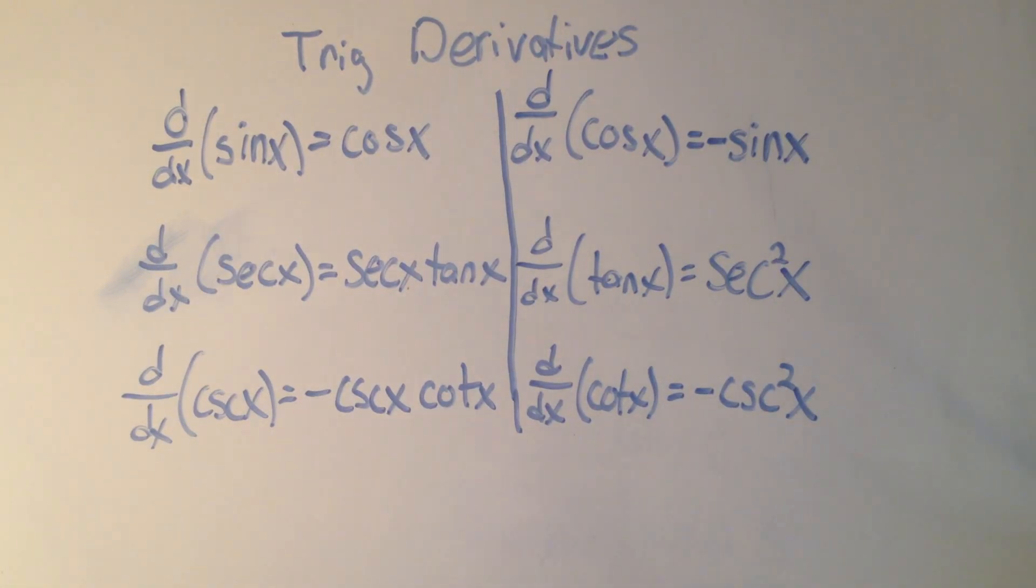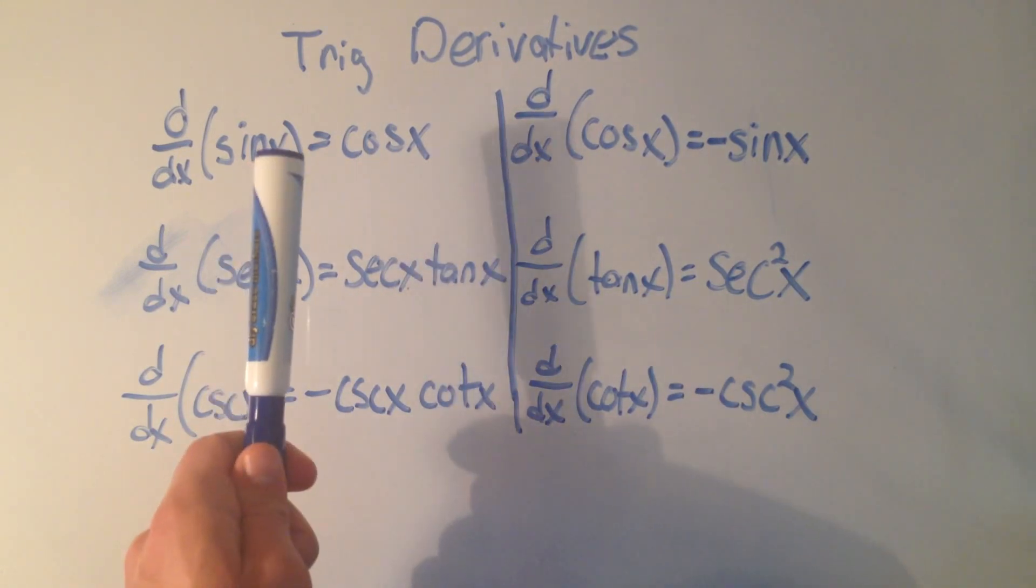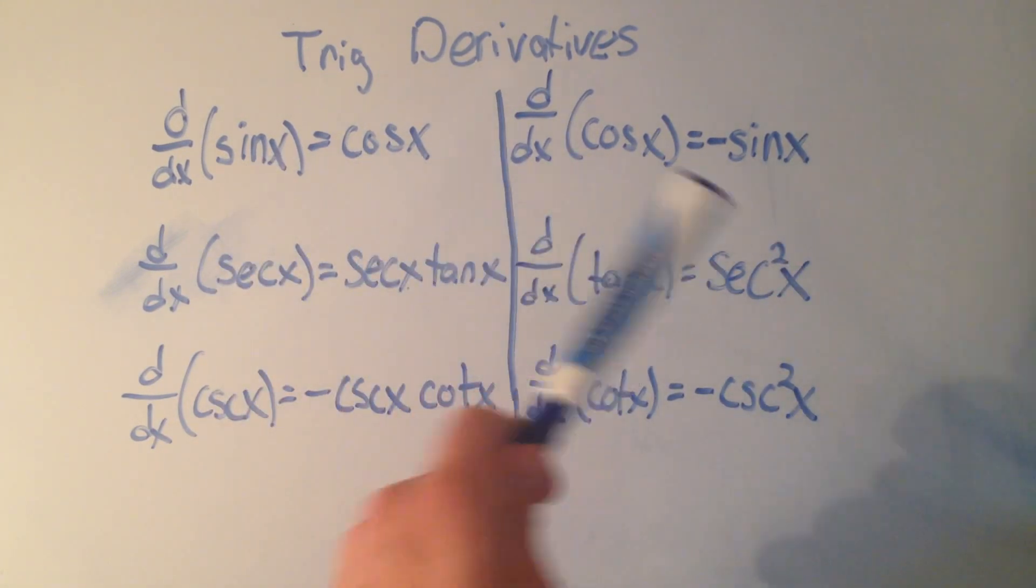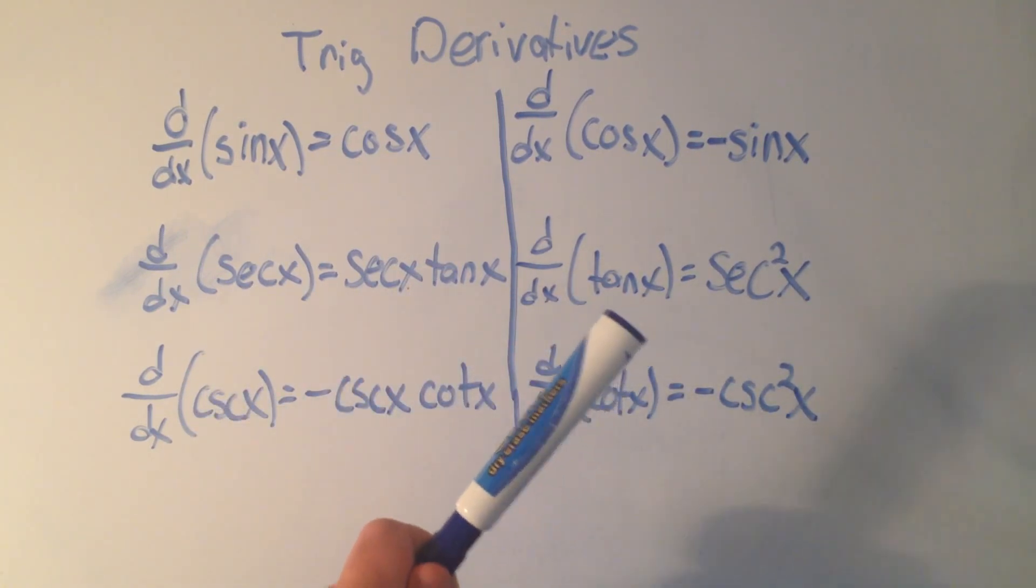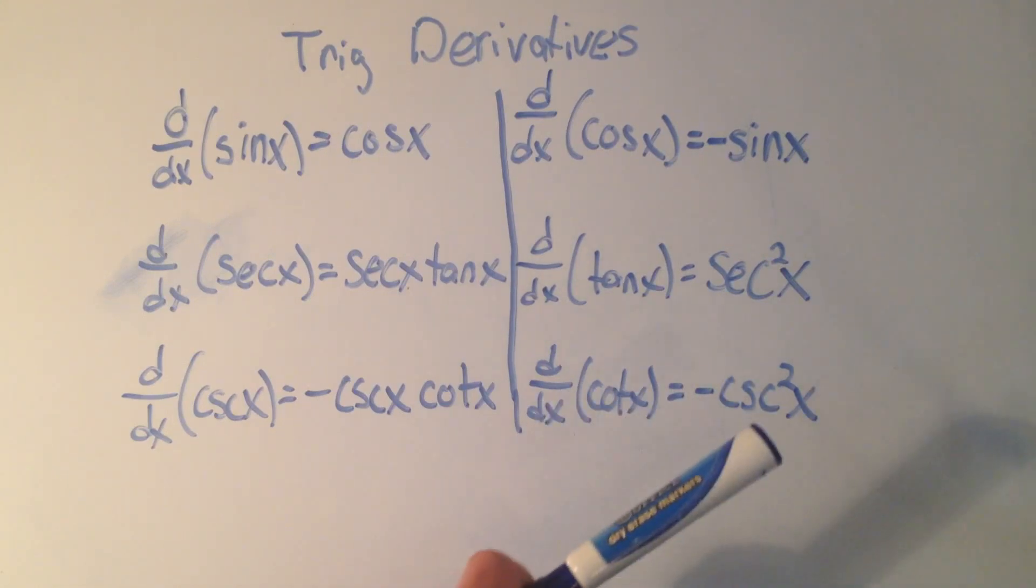There's sort of only three you have to remember, because if you know sine, you know cosine. If you know secant, you know cosecant. And if you know tangent, you know cotangent.